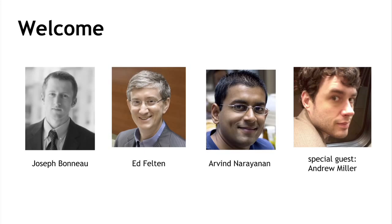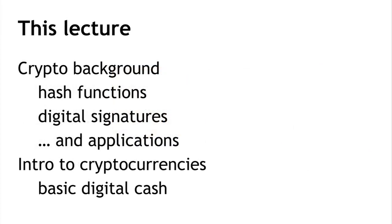There will be 11 lectures in total. In this lecture, number one, we're going to do two things. First, we'll introduce some cryptographic primitives that are necessary for talking about cryptocurrencies — in particular, cryptographic hashes and digital signatures — and talk about some of the ways those are used to build cryptocurrencies. Then at the end of the lecture, we'll start talking about cryptocurrencies and give some examples of simple cryptocurrencies that illustrate some of the design challenges we need to deal with.